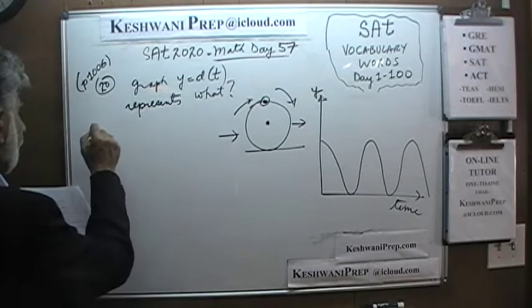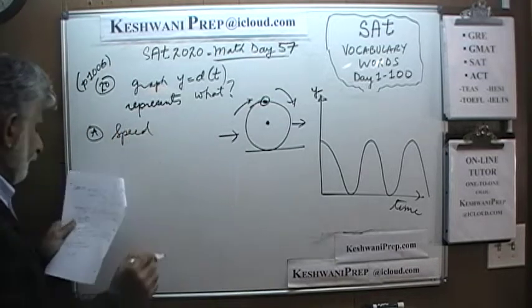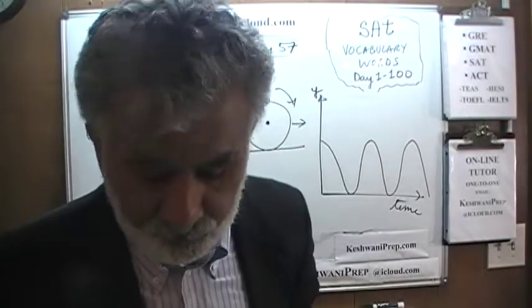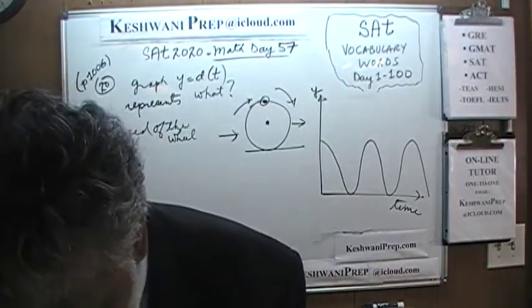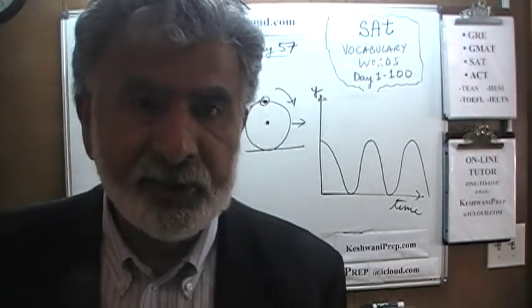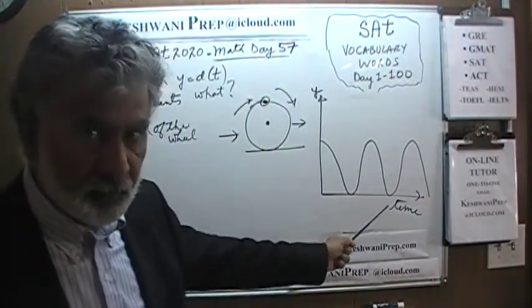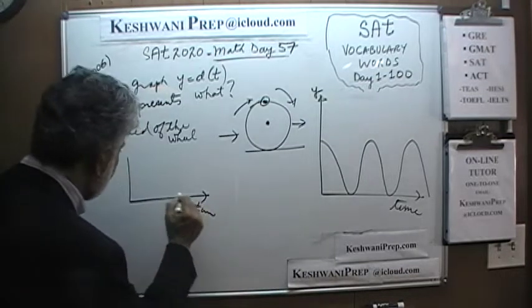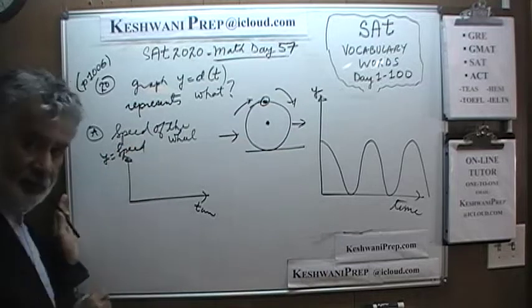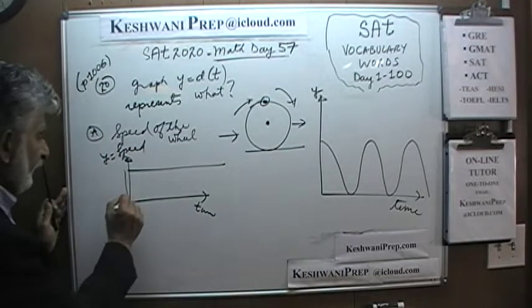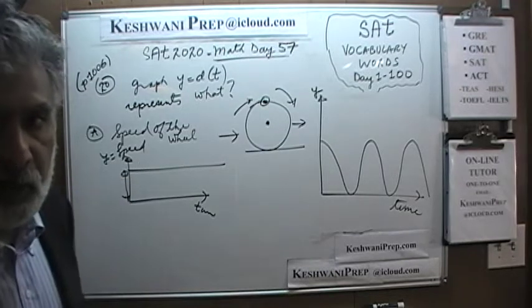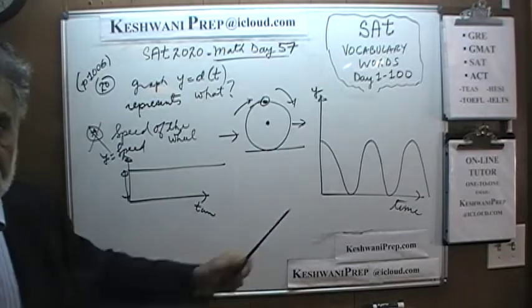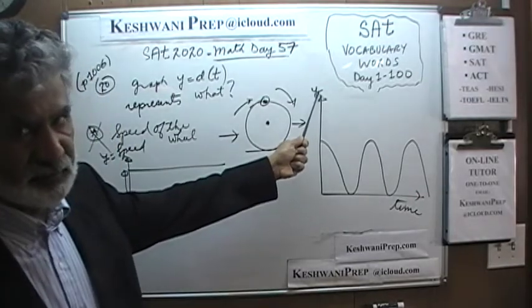Answer choice A says it is the speed of the wheel. It could not be speed because the problem tells us the wheel is rolling at a constant speed. So no matter what time we look at it — 5 seconds, 10 seconds, 30 hours from now — the speed is constant. If Y represented speed, the graph would be a flat horizontal line. That is obviously not this graph, so the answer A is wrong.